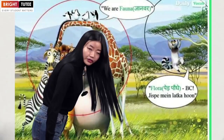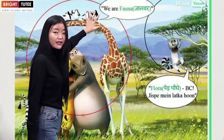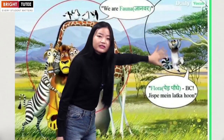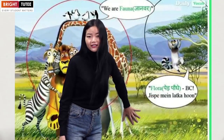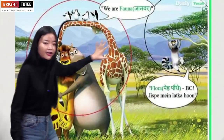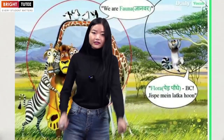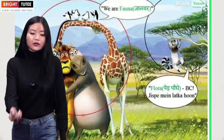If you ever forget the meaning, try to remember these pictures. Flora = plant kingdom, Fauna = animal kingdom. Is that clear, everyone?